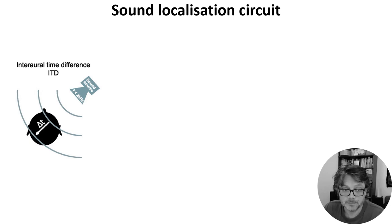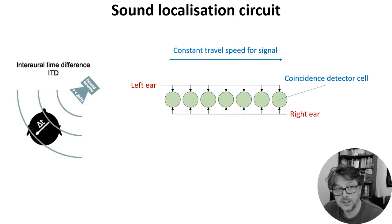So, how can we detect this? One model is due to Lloyd Jeffress in 1948 and still found in textbooks, although the reality is a bit more complicated, as we'll see. In his model, you have an array of what are sometimes called coincidence detector neurons. These are neurons that will only fire a spike if they receive a simultaneous input from both their synapses. The signal arrives from the left ear and travels at a constant speed along this pathway, arriving at each neuron with a slightly different delay. At the same time, the signal arrives from the right ear and does the same thing, but in the reverse direction. When the acoustic delays exactly cancel with the neural delays, the signal will arrive at the coincidence detector at the same time and cause it to spike. And we can use the identity of which neuron fired a spike to tell us where the sound came from.